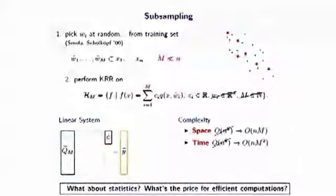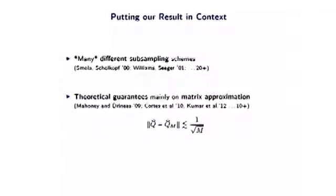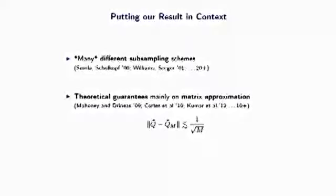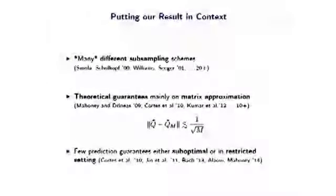Is there a statistical price to pay for efficient computations? That is the question our work answers. For context: there are many subsampling schemes beyond uniform sampling. A lot of theoretical work has studied the subsampled kernel matrix, but it is not clear what the impact is on the statistical properties of the estimator. A few works studied the statistical properties directly, but the results are suboptimal or work only in a restricted setting.